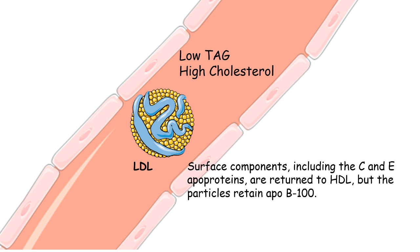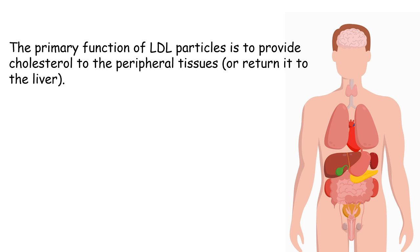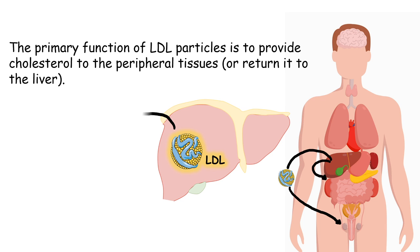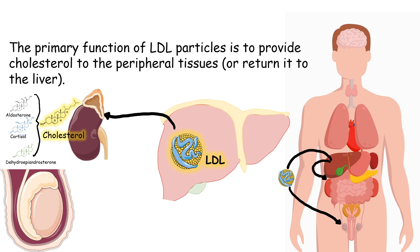Eventually the apolipoprotein C and E are taken up by HDL or utilized to activate lipoprotein lipase, leaving LDL with primarily Apo B100. LDL's major function is to transport cholesterol from the liver to peripheral tissues, or to return cholesterol to the liver. For example, the LDL particle originally formed in the liver as VLDL would carry cholesterol to the testes or adrenal gland.